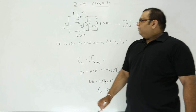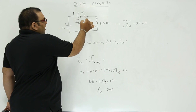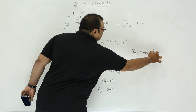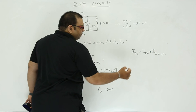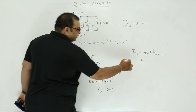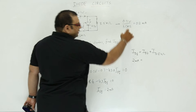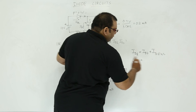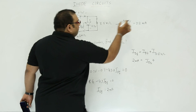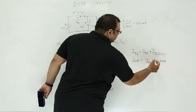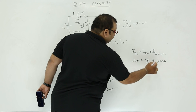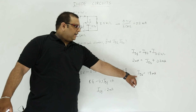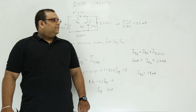To find the current in the second diode, we apply KCL: ID1 equals ID2 plus the current in the 3.5 kΩ resistor. We have ID1 = 2 milli-amperes and the current in the 3.5 kΩ = 0.2 milli-amperes. Solving, ID2 = 2 minus 0.2 = 1.8 milli-amperes. So the current in the first diode is 2 mA and the current in the second diode is 1.8 mA.